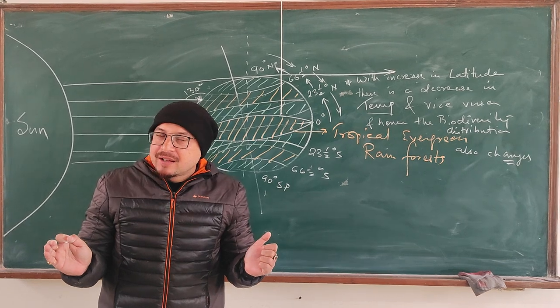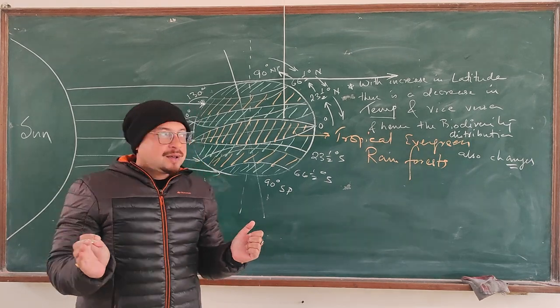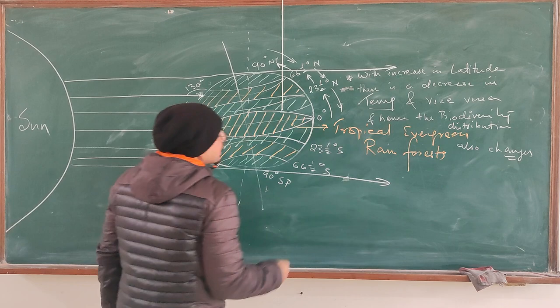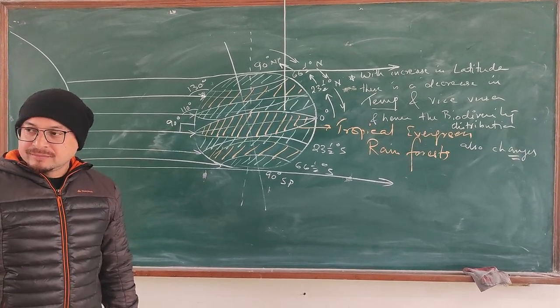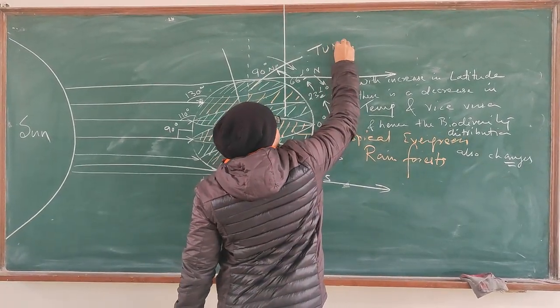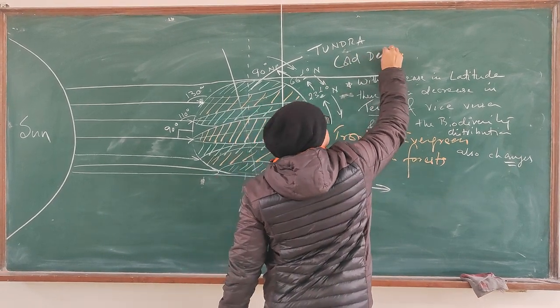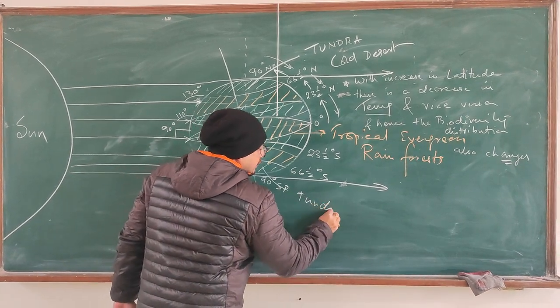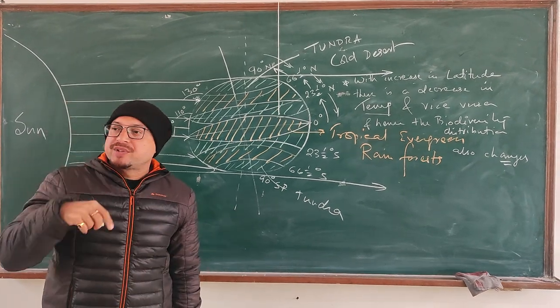Hence, the temperature would be extremely cold. So both in the north as well as the south, you see the sunlight is passing by tangentially. Hence, there will be Tundra, T-U-N-D-R-A, which is the frozen deserts, both towards the north pole and towards the south pole.